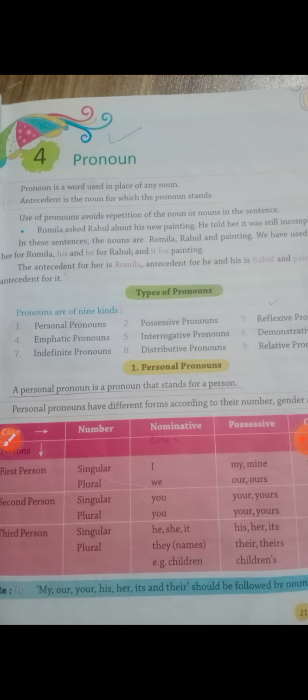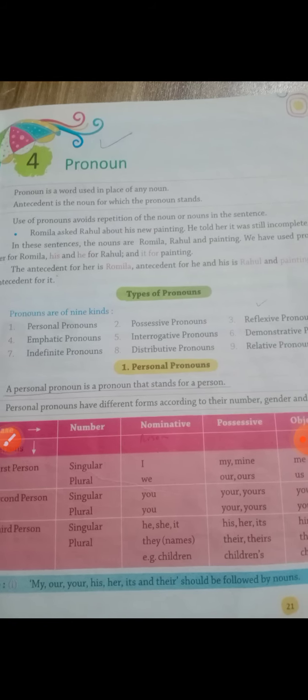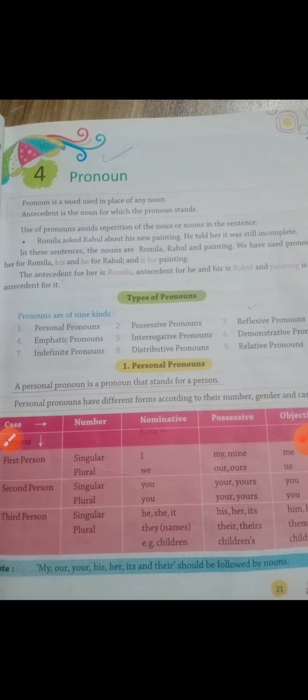Toh ab yeh samajh lo yeh pronouns hote kya hain — aap janoge ki types of pronouns, pronouns ke kitne prakar hote hain. Theek hai? There are nine kinds of pronouns. First: personal pronouns. Second: possessive pronouns. Third: reflexive pronoun. Fourth: emphatic pronoun. Fifth: interrogative pronoun. Sixth: demonstrative pronoun. Seventh: indefinite pronouns. Eighth: distributive pronouns. Ninth: relative pronouns. Clear?